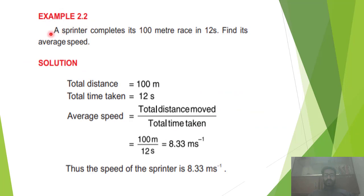Example 2.2: A sprinter completes its 100m race in 12 seconds. Find its average speed. The distance is given as 100m and time is given as 12 seconds.